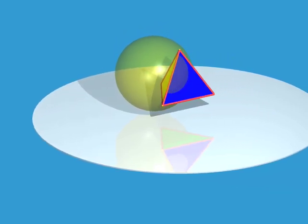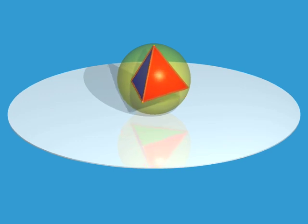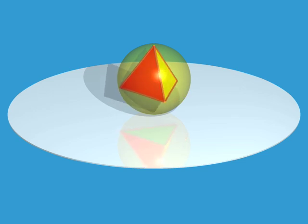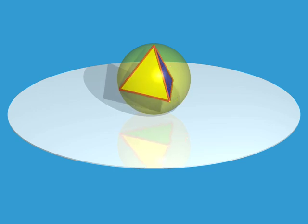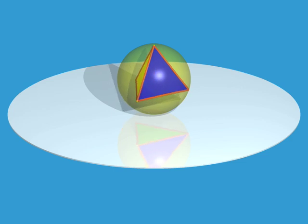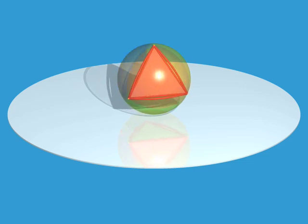To get a better understanding of four-dimensional polyhedra, we can do just what the lizards did with the three-dimensional polyhedra. We first inflate them so that they lie on a sphere, and then project this stereographically onto the plane.